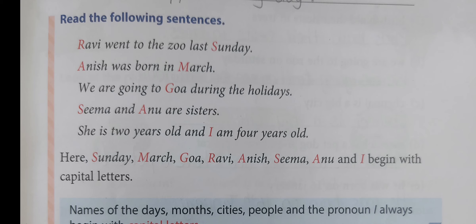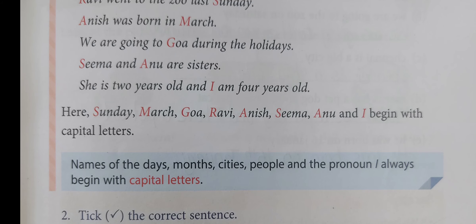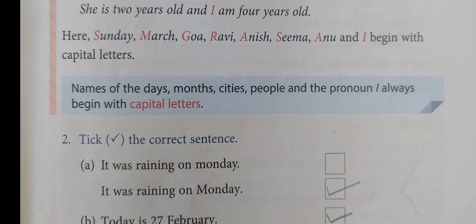Jo bhi letters ko highlight kiya hai, dhyan se dekho — woh kahaan aur kab kaise likha gaya hai sentence mein. Here, Sunday, March, Goa, Ravi, Ani, Seema, Anu and I begin with a capital letter. Yeh sab capital letter se start kiya gaya hai. Is mein days, months, city, people and the pronoun 'I' ka use hua hai.